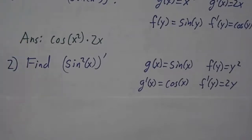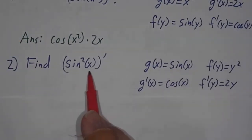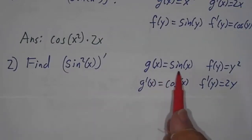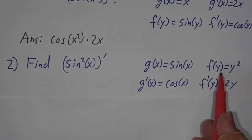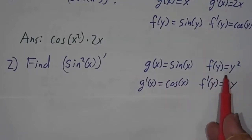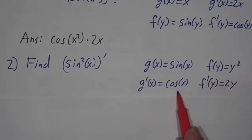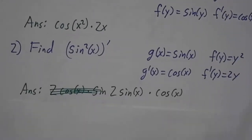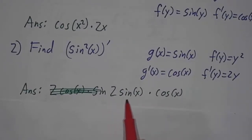What about the derivative of sine squared of x? Sine squared of x is what you get when you first take sine of x, and then you square it. So g of x is now sine of x, and the second step is squaring. The derivative g prime is cosine of x, f prime is 2y. So our answer is 2y times dg/dx, so 2 times f prime of sine of x times g prime of x.